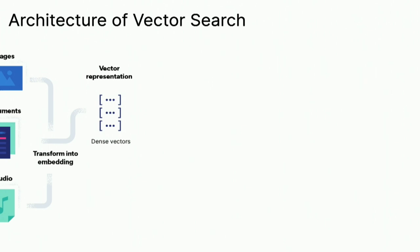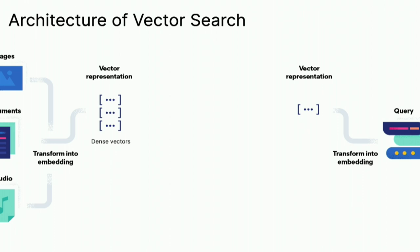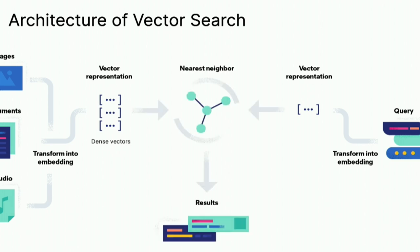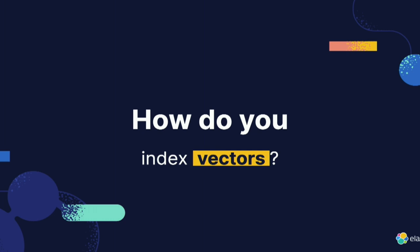How does it work behind the scenes? You have documents, images, audio, whatever — and you transform those into embeddings, which are vector representations of the data, called dense vectors. On the other side, you provide a query, generate a vector representation of it through the same process, and then find the nearest neighbors from what you've indexed so far.